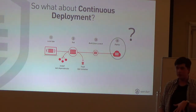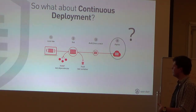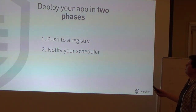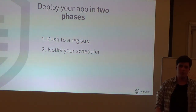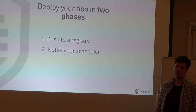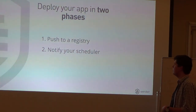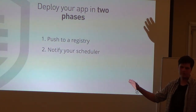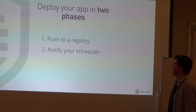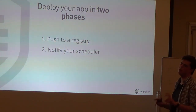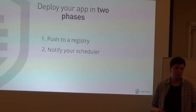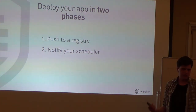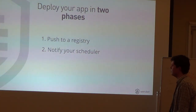So the method of deployment has changed, and the answer of how to do this is quite similar to how you should fix your build pipeline: split it up into two phases. First phase is to push to a registry - take the artifact your build pipeline created and push it into Docker Hub or any other registry. Then as a second step, notify your scheduler and tell it: I have this new container image, and I want you to take care of it and deploy it onto production.